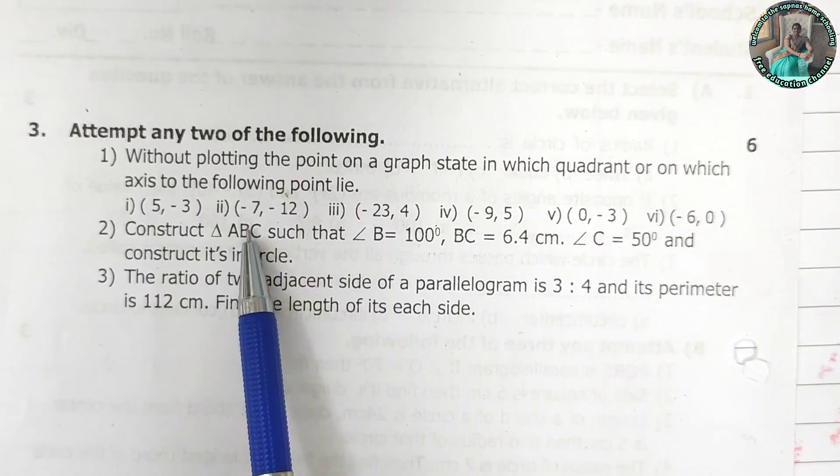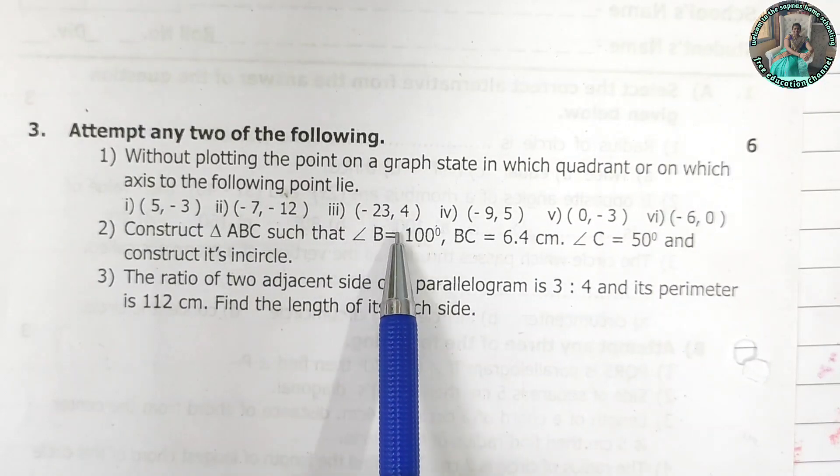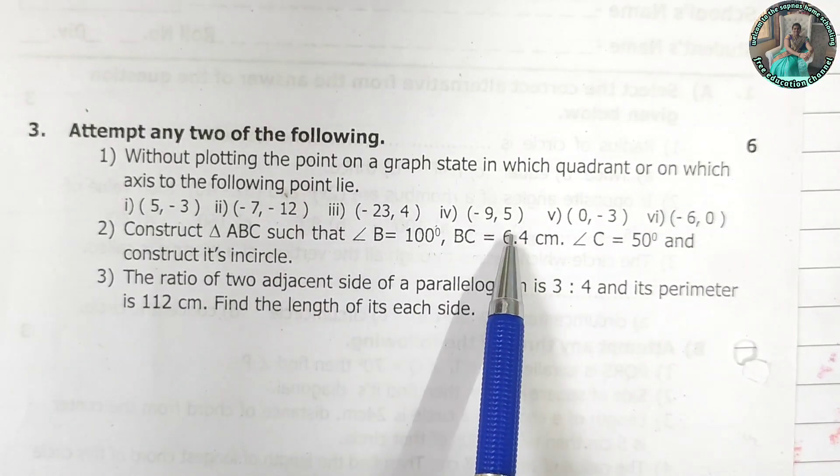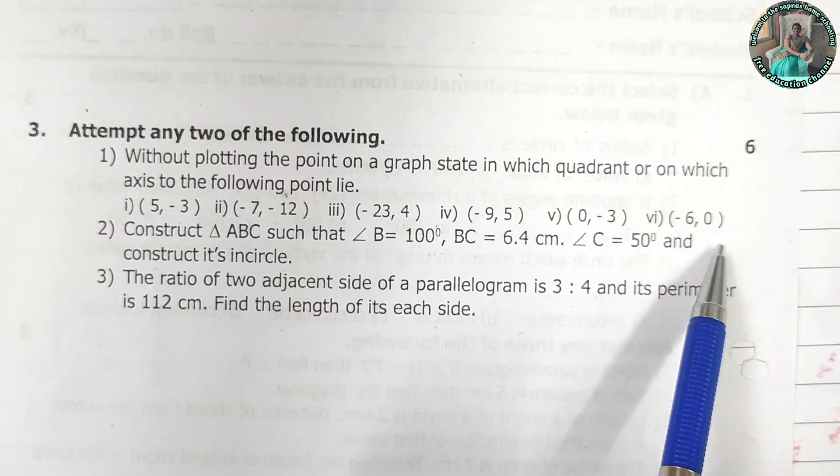5 and minus 3, minus 7, minus 12, minus 23, 4, minus 9, 5, 0, minus 3, minus 6, 0.